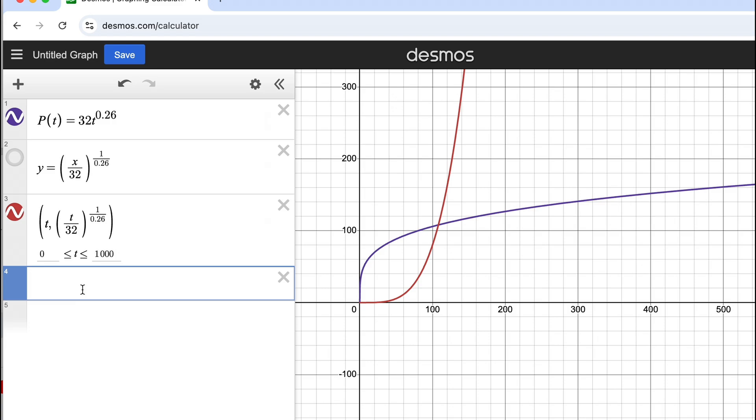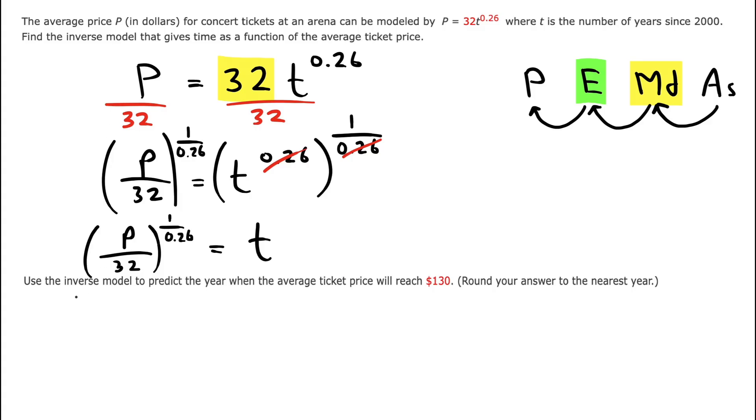As we can see, the inverse is a reflection, like a mirror image of the original, reflected across the y equals x line. So it looks like I do have the inverse function here.